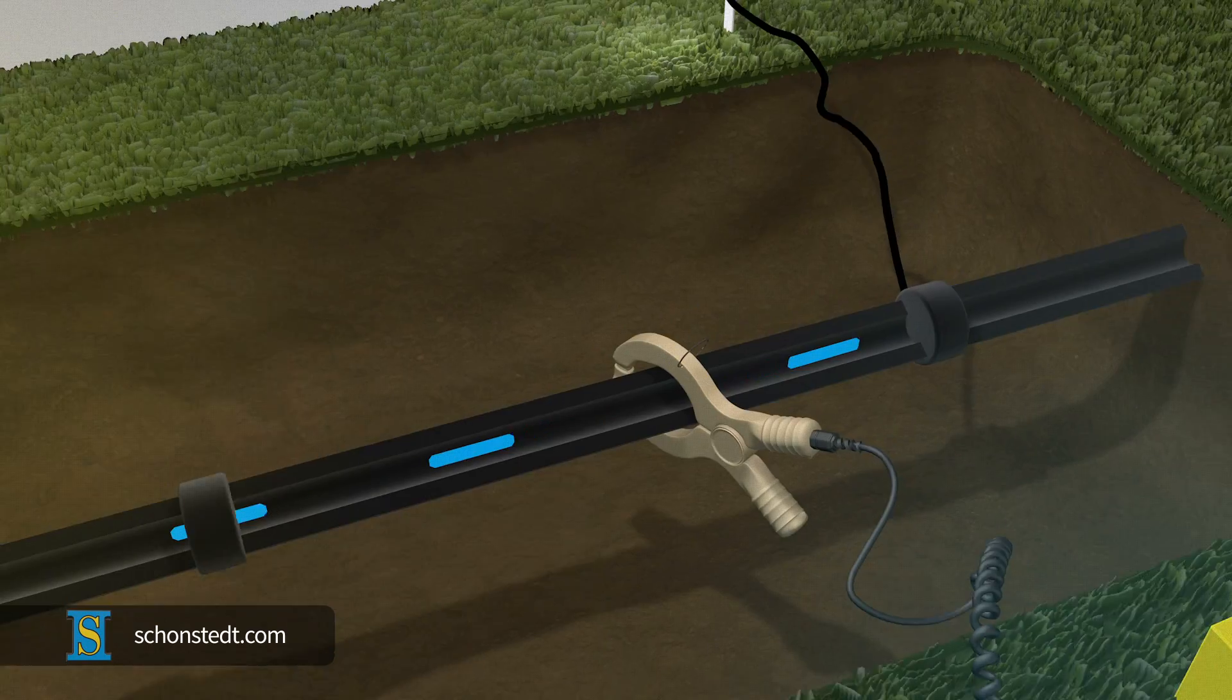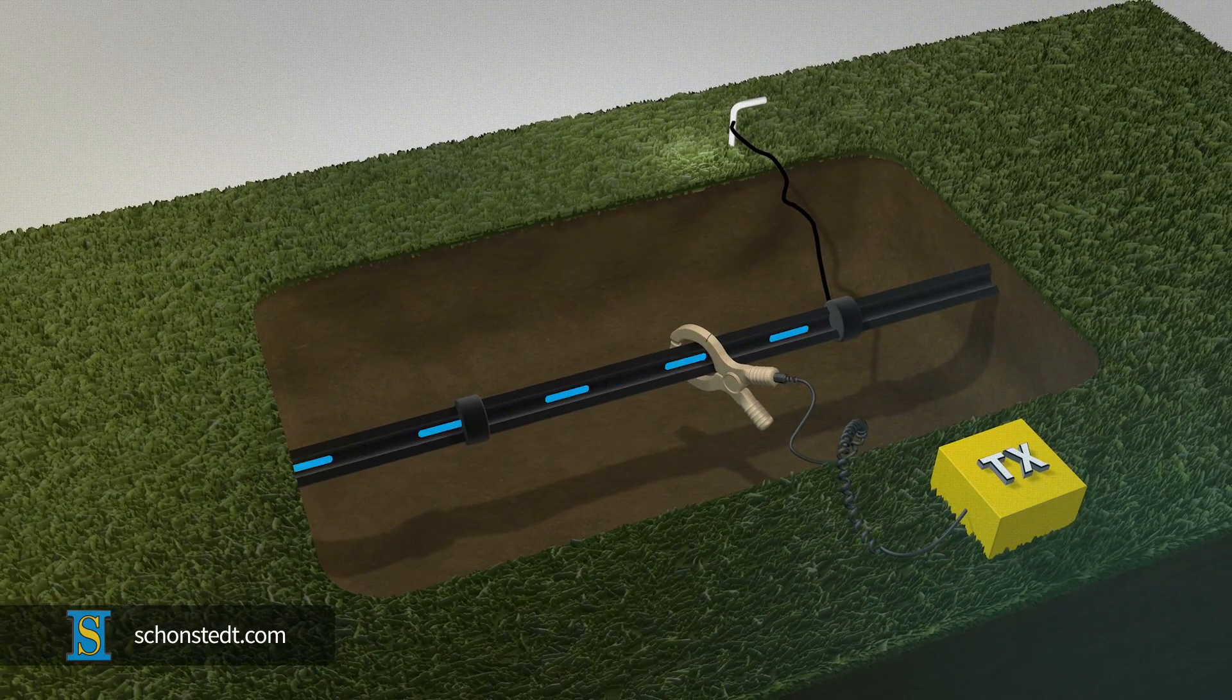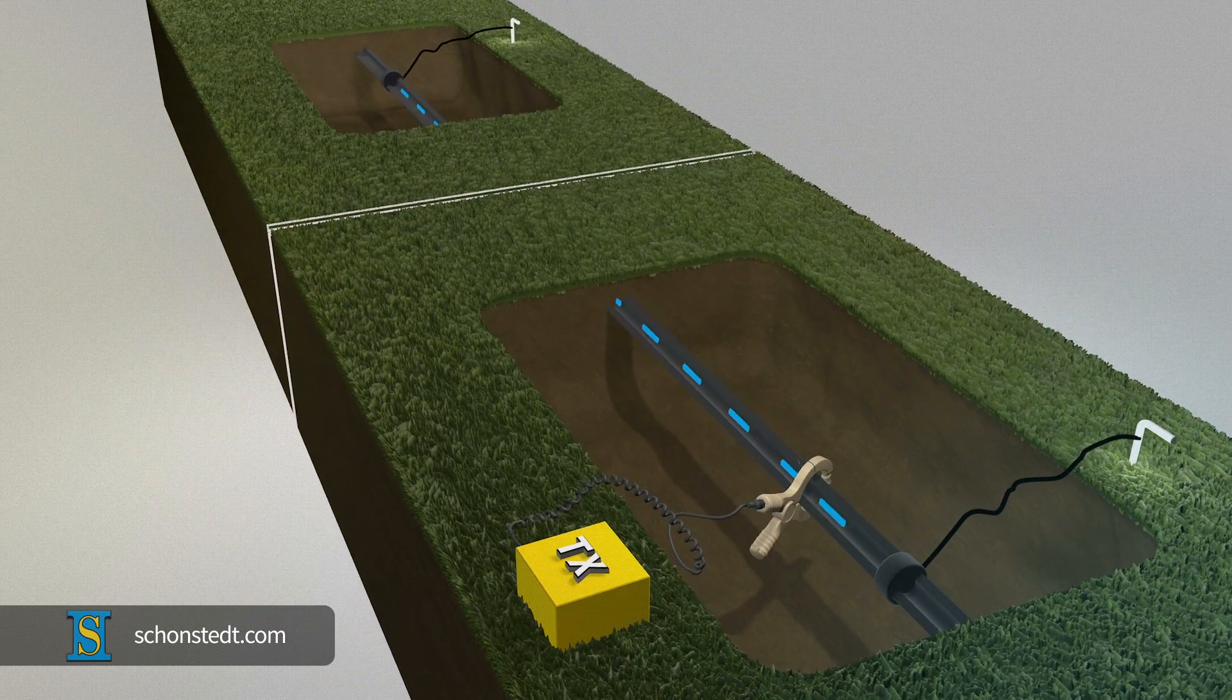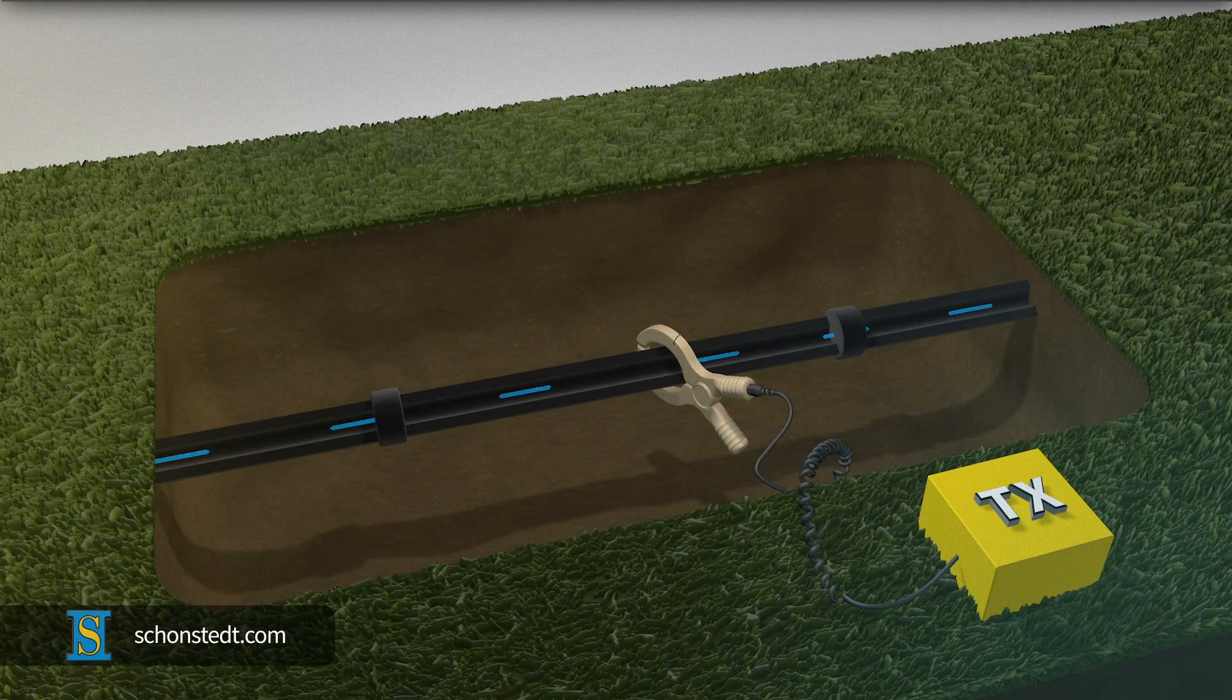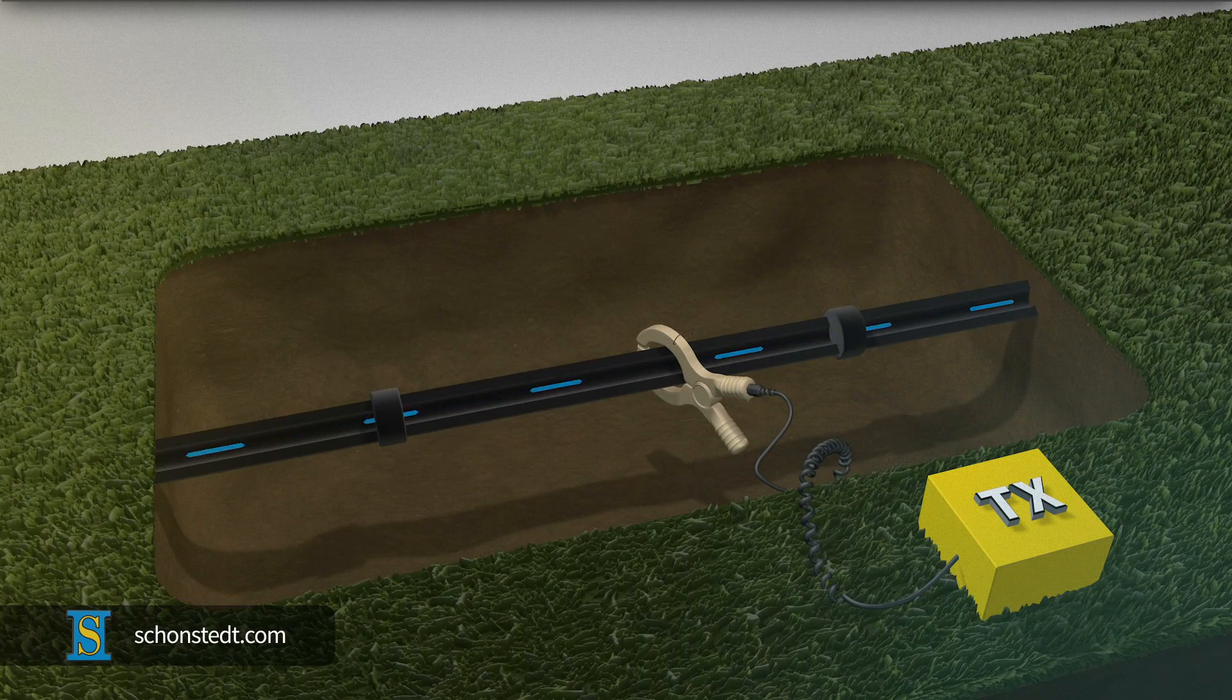At least one end, but preferably both ends – the near and far of the pipe or cable – must be well grounded. Without a ground, the current will be extremely low, which will make locating nearly impossible.